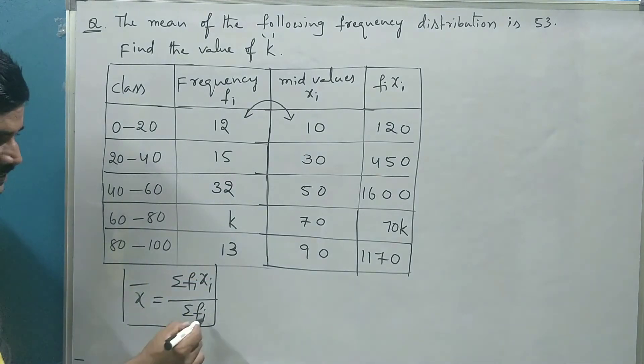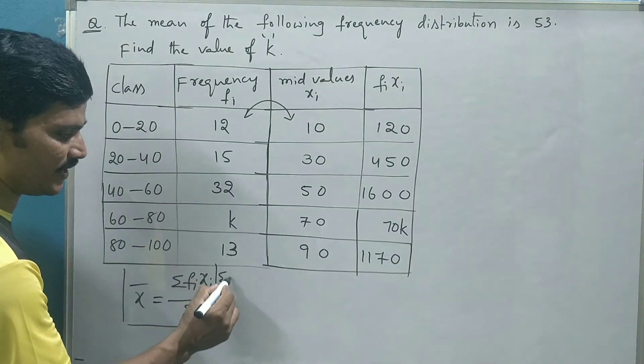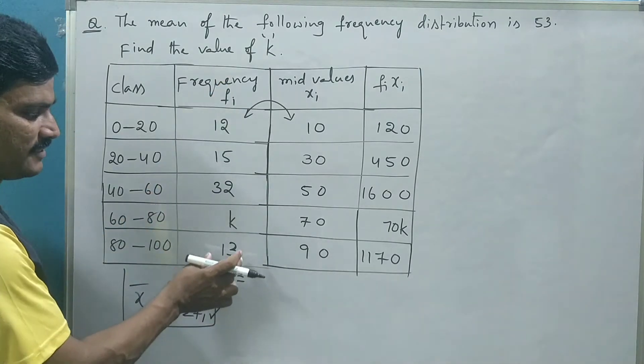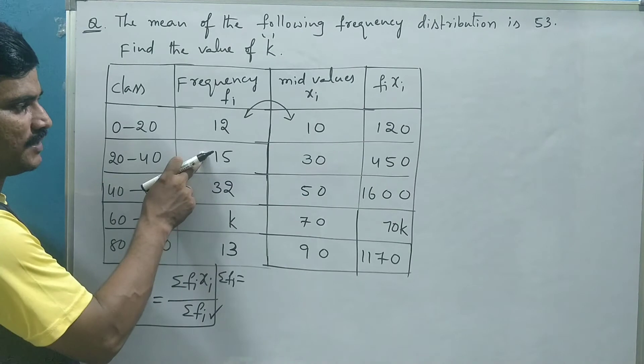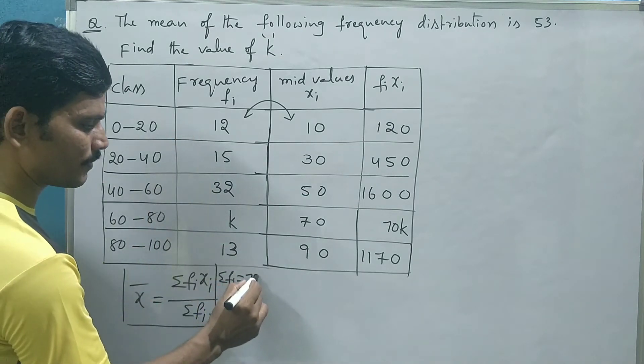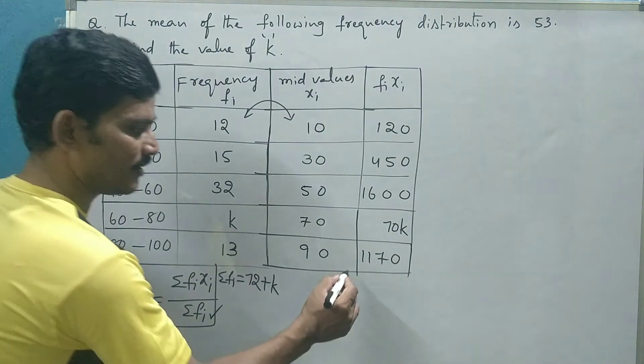This is Σfi. Let us find the sum of all these frequencies. 30 plus 32, 45 plus 15, 60 plus 12, 72 plus variable k.